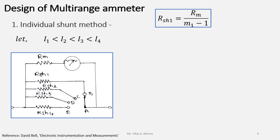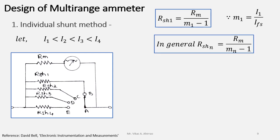Now the same equation is applicable. So we can write the value of Rsh1 equals Rm upon M1 minus 1 where M1 equals I1 upon Ifs. In general, Rshn equals Rm upon Mn minus 1 where n equals 1, 2, 3, etc. That depends upon how many ranges we have to convert the basic ammeter to form a multi-range ammeter.